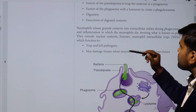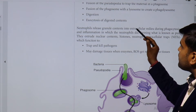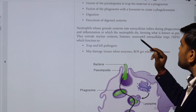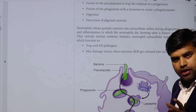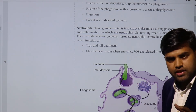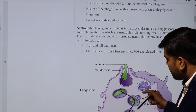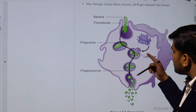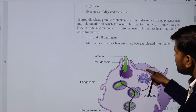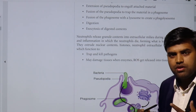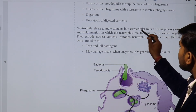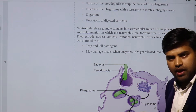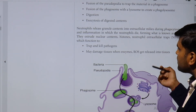After digesting everything, the neutrophil releases granule contents into the extracellular environment during phagocytosis and inflammation. Once this work is finished, the neutrophil dies. Dead neutrophils form pus. The neutrophil extrudes nuclear content containing histones — these are called neutrophil extracellular traps (NETs) — which function to trap and kill pathogens.